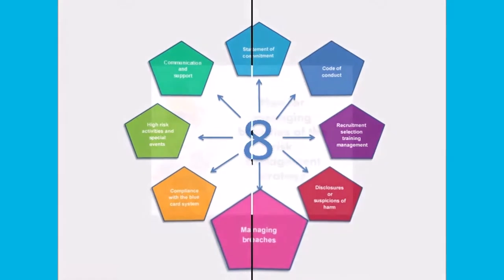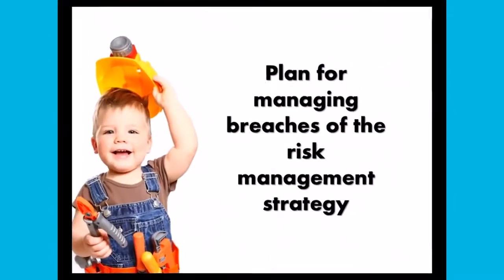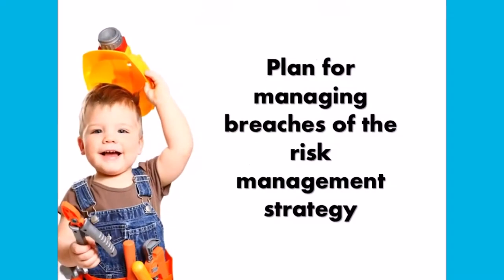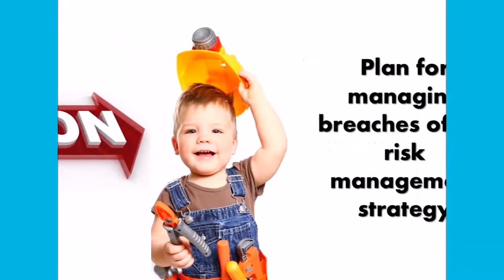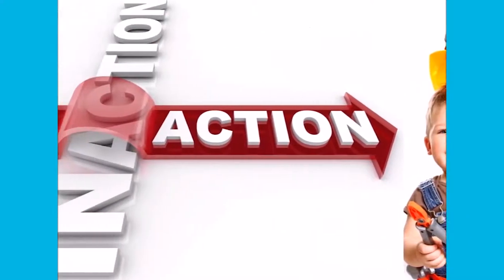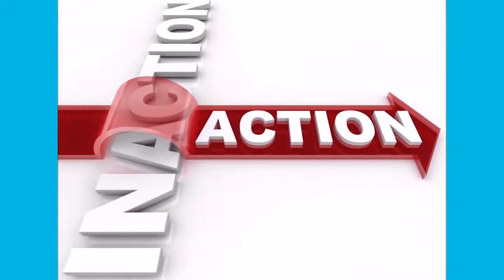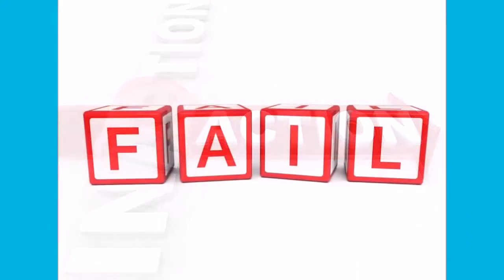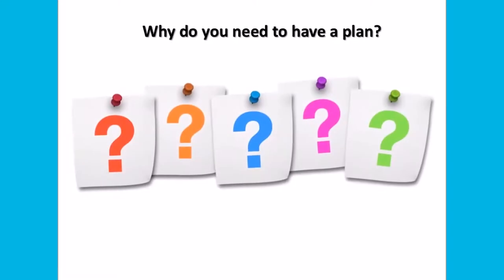The fifth requirement is to have a plan for managing breaches of your risk management strategy. Your risk management strategy must include a plan for managing any action or inaction by a person in your organization that fails to comply with any of the policies which make up your risk management strategy.